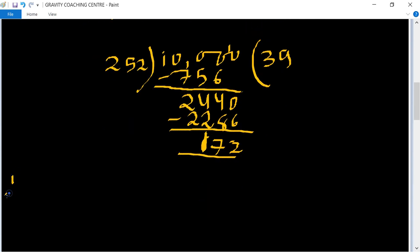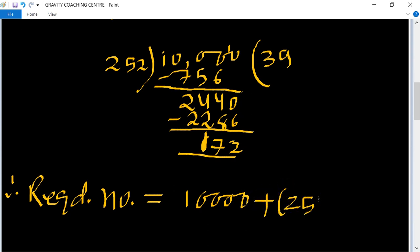Therefore, the required number equals 10,000 plus 252 minus 172, which equals 10,000 plus 80, giving 10,080.